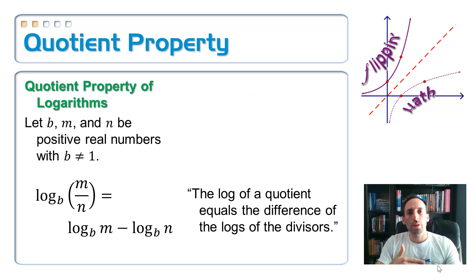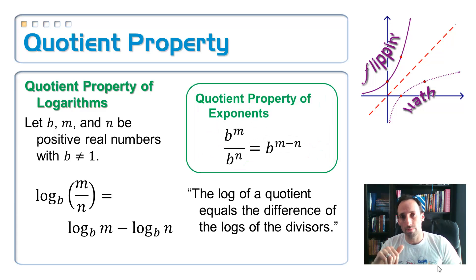Okay. So here are the next properties. We have two more. Quotient property. Quotient. What does quotient mean? It means division. It looks like a fraction, right? So over there down at the bottom, the log base B of M divided by N this time is equal to the log base B of M minus the log base B of N. So the log of a quotient is equal to the difference of the log of the two things that you're dividing by.